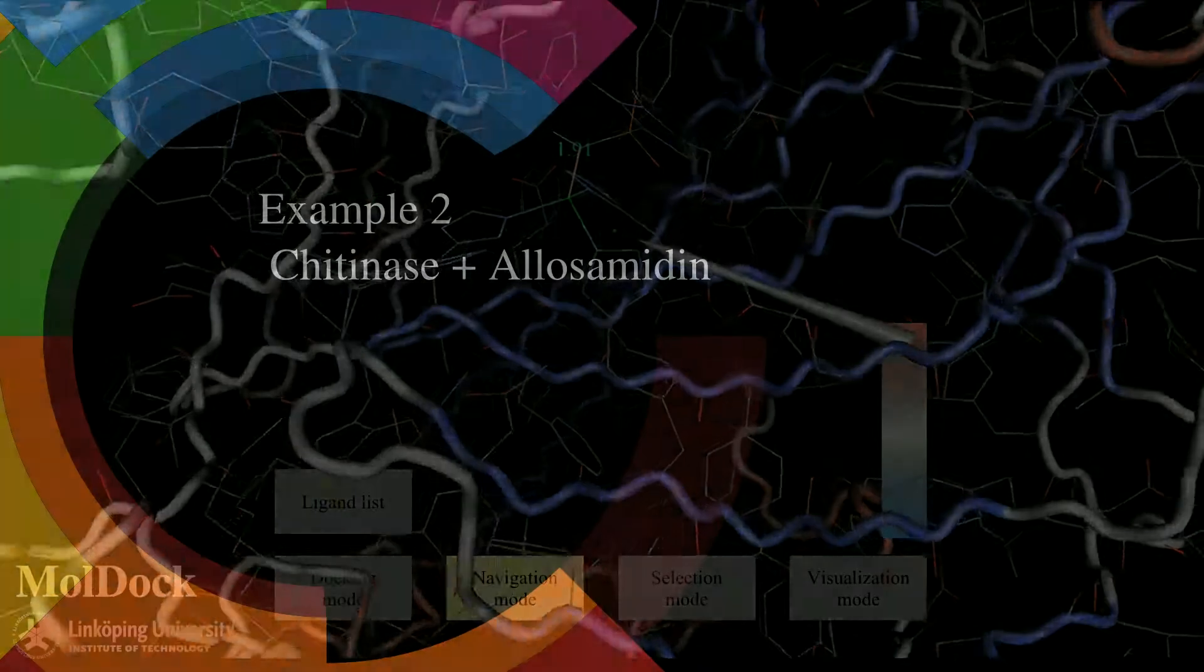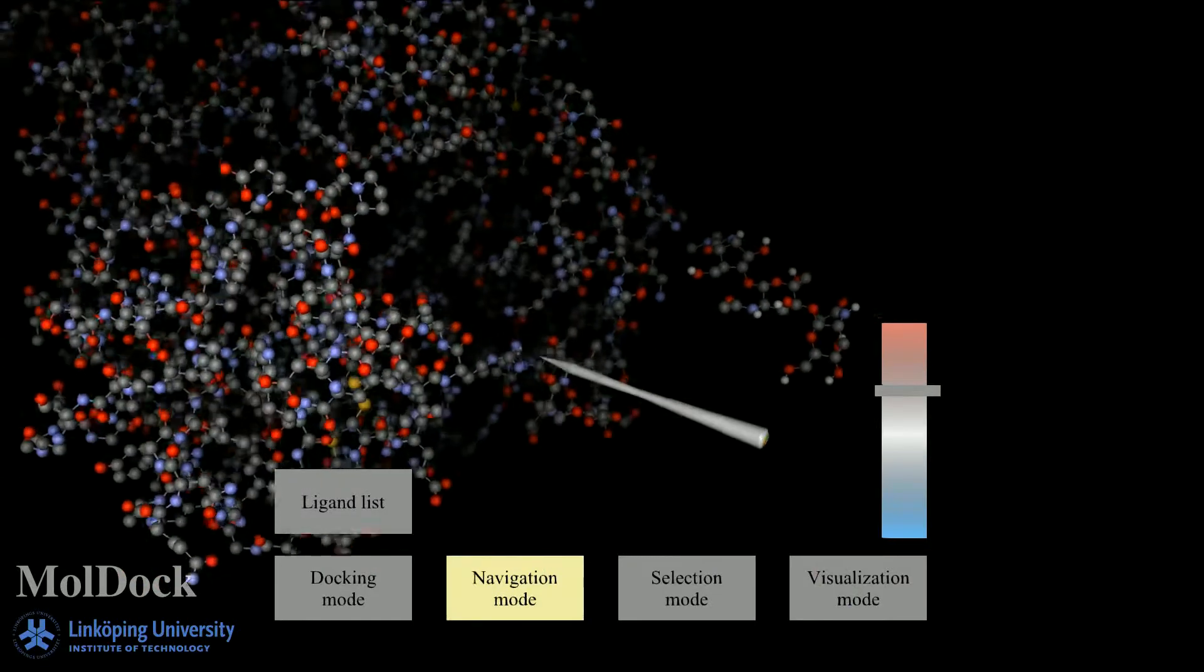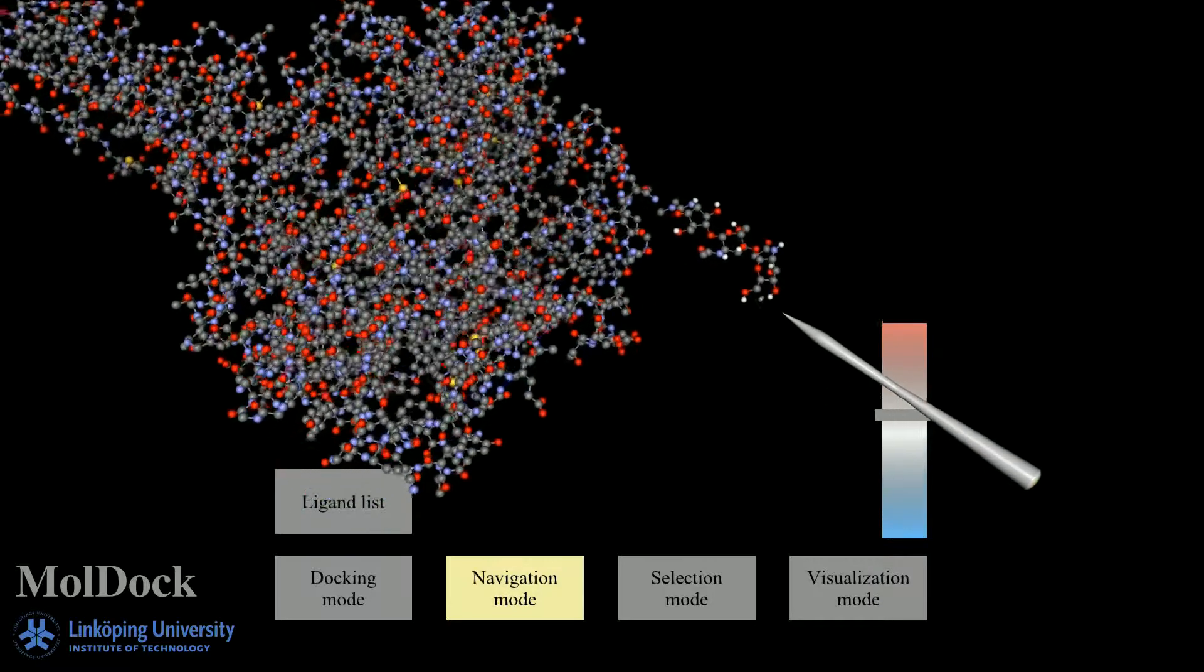Our second example is a protein called chitinase, which is found in a pathogenic human bacterium. Here, we investigate the docking of an inhibitor molecule called allosamidine.